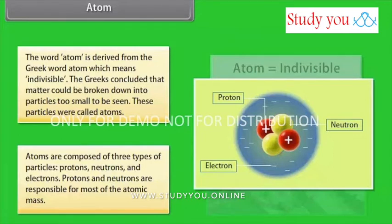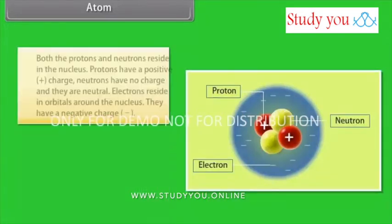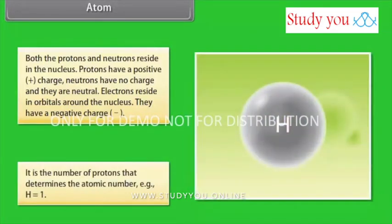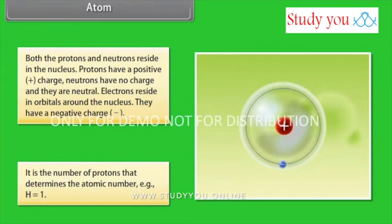Protons and neutrons are responsible for most of the atomic mass. Both the protons and neutrons reside in the nucleus. Protons have a positive charge. Neutrons have no charge and they are neutral. Electrons reside in orbitals around the nucleus. They have a negative charge. It is the number of protons that determines the atomic number. That is, H equals 1.